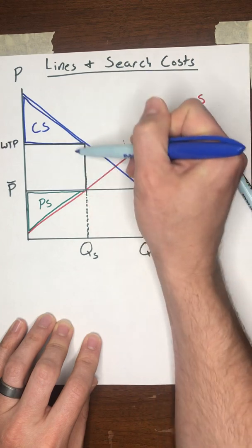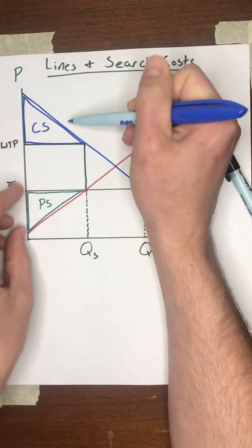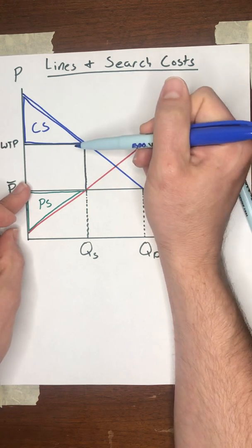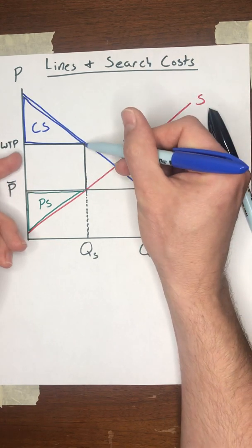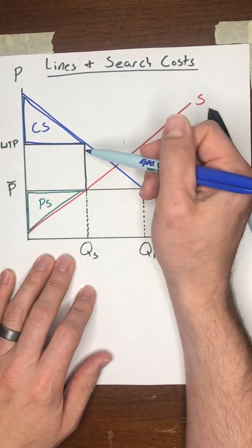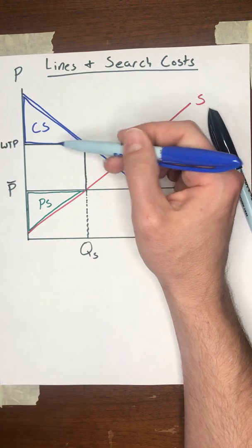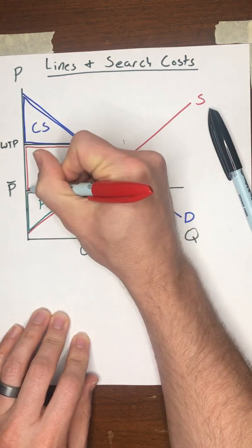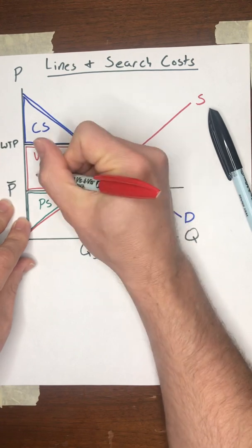Notice that leaves a gap in here, between the producer surplus and the consumer surplus. If there was no waiting in line, and these were the buyers who managed to get the units, then all of this area in here would be filled up as consumer surplus. That's what the legislature intends to happen. Or if there's bribes and black markets, then all of this area in the middle is going to be captured by the sellers. It would all end up as producer surplus, which is not what the legislature intended, but it's an unintended consequence of the shortage. But if instead of any bribes or black markets, the buyers are just waiting in line, nobody gets that amount. This area here represents the value of wasted time.